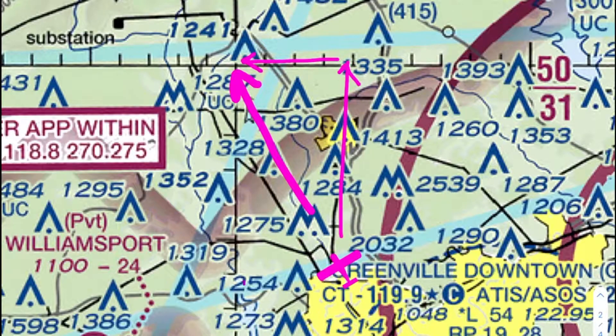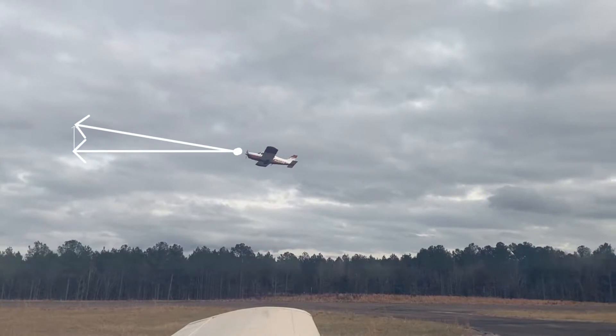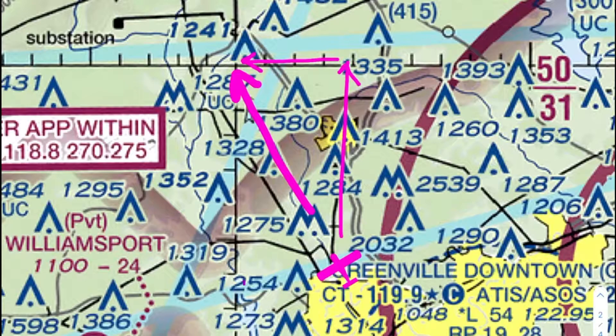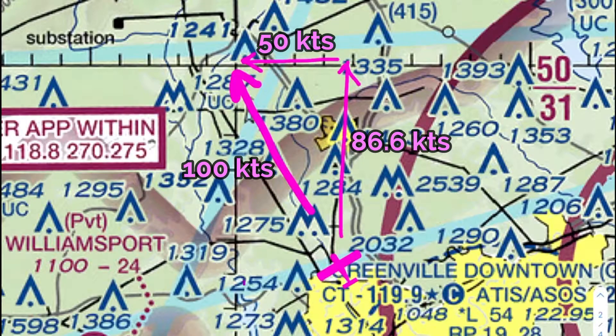As you can see, an aircraft moving northwest has a north and a west component added together to make the final northwest heading. This is simply a different way to think about the universe, but it has very real impacts. In this example, the aircraft would move 86.6 nautical miles north and 50 nautical miles west every hour on its current heading.